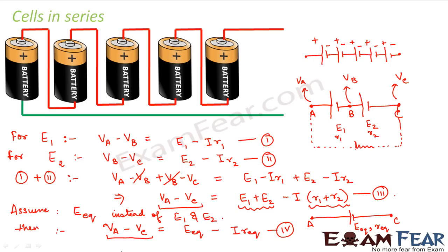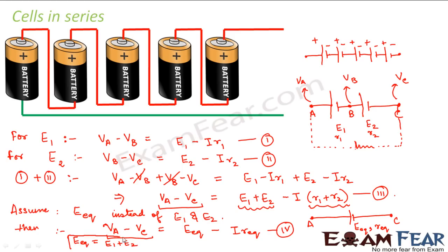Therefore, we conclude that for cells arranged in series, the equivalent EMF is equal to the sum of the individual EMFs, and the equivalent internal resistance is equal to the sum of the individual internal resistances.